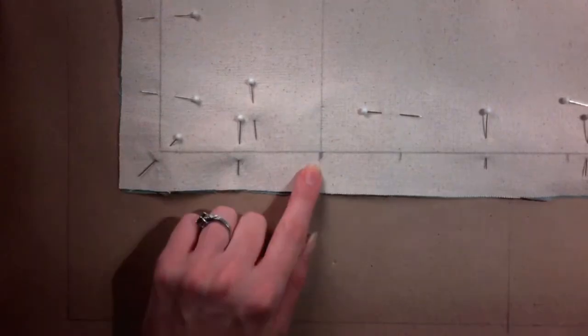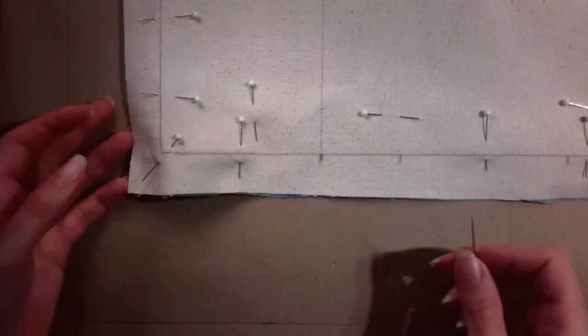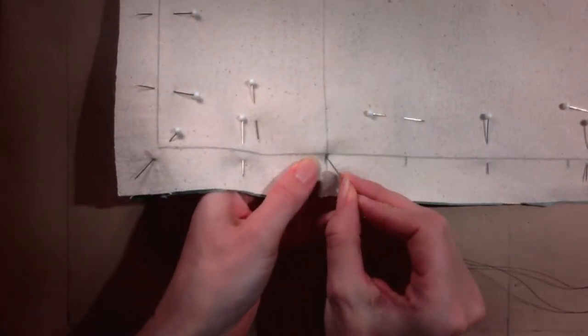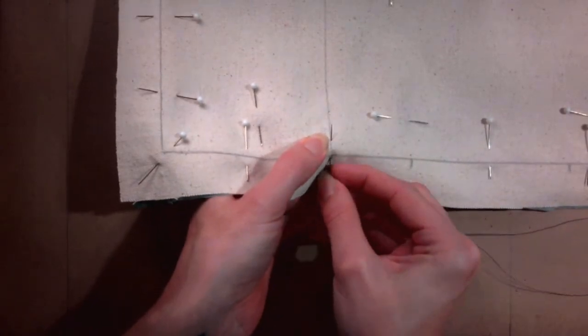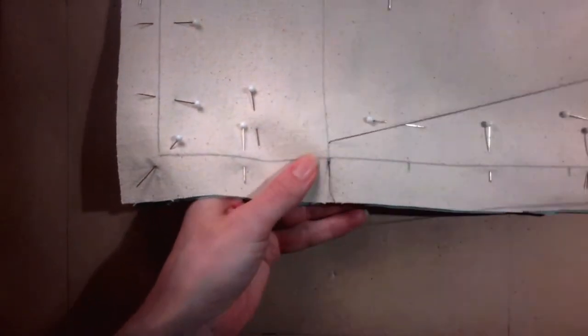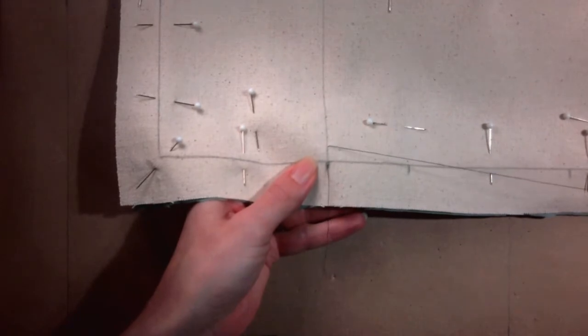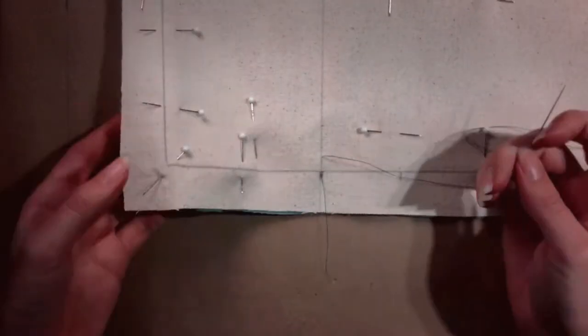Find the end of one of the strap placement lines. Starting on the wrong side of the fabric, push the needle down through both layers of fabric right on the line. Travel forward about a half an inch and come back up through the fabric right on the line. Pull until about 3 inches of thread remain.